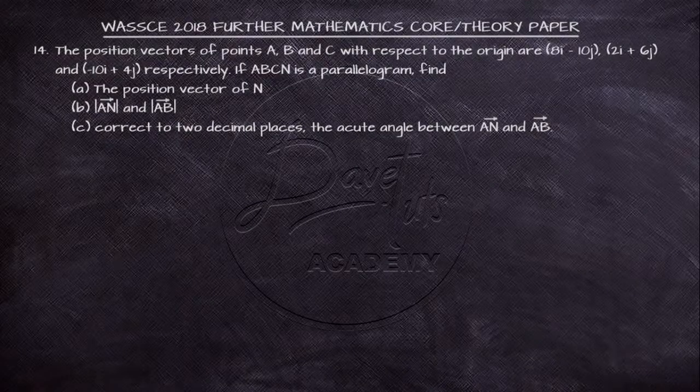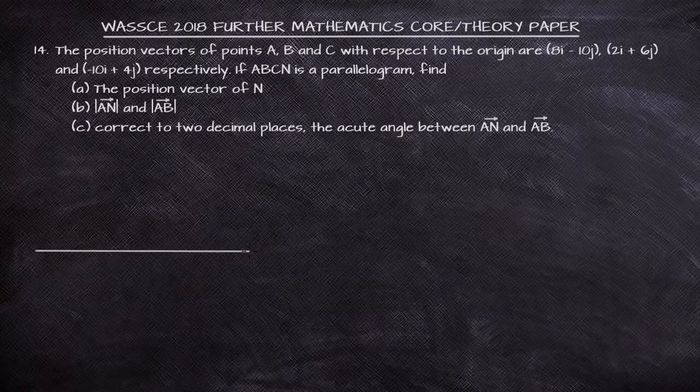In our question, we are given the position vectors of points A, B, and C, and we are told that A, B, C, and another new point N, they all constitute a parallelogram. We are to find the position vector of N, the magnitude of AN, and the magnitude of vector AB. Then we are to find the accurate angle between vector AN and vector AB.